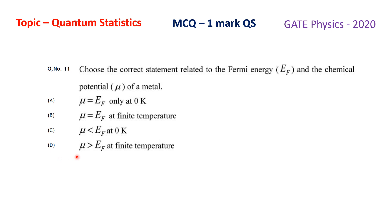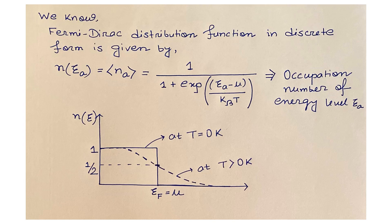And the last option, option D: μ greater than Ef at finite temperature. Let us see how to solve this problem. We know the Fermi energy distribution function in discrete form is given by